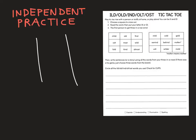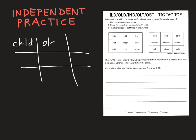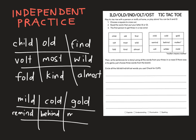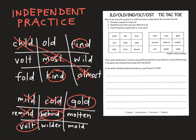Now it's time for some independent practice. Today you can create your own tic-tac-toe boards with ild, old, ind, olt, and ost words inside. Then you can play tic-tac-toe with a friend, a person at home, or a stuffy — or just play on your own. Once your board is ready, you can start to play. Use your three words from each winning tic-tac-toe row to make sentences or write a story. If there was a tie or nobody won, you can use three words from each board. Make sure you circle all of your closed syllable exception words and check for caps. Have fun!